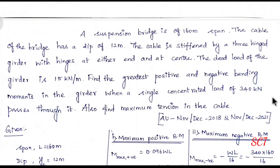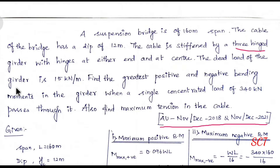Hello friends. This question was asked by Anna University in November-December 2018, and again in November-December 2021. It involves a 3-hinged stiffening girder problem — a suspension bridge.